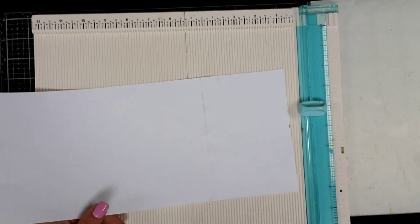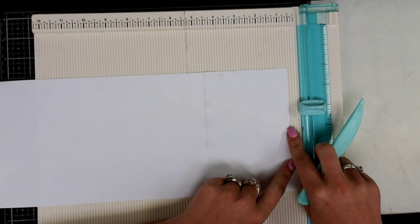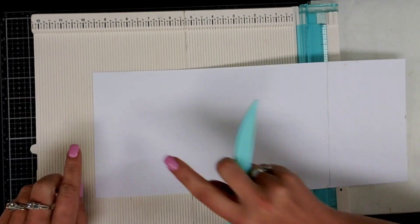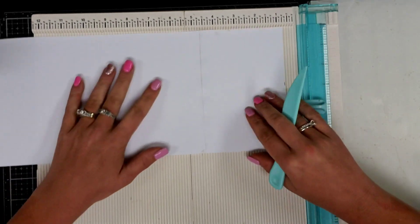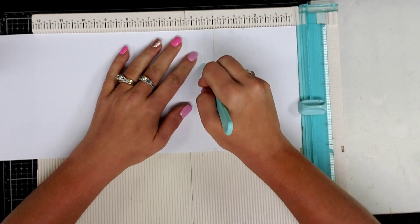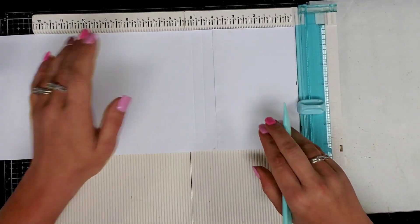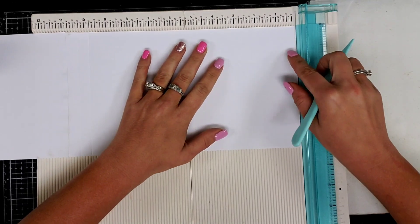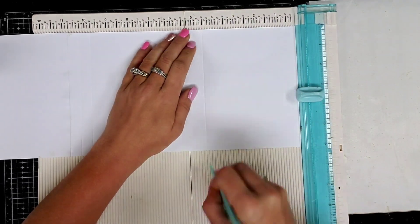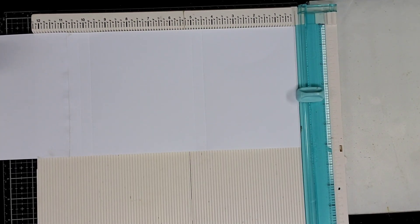So next what we're going to do is we're going to score it at 4 1/2 inches and 5 inches from one end, and 4 1/2 inches and 5 inches from the other end. So we're going to score it at 4 1/2 inches and 5 inches. That is our spine. And then we're going to do the same from the other side, 4 1/2 inches and 5 inches. And there's our spine to our journal.